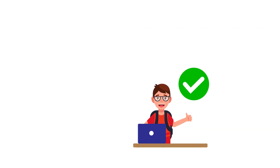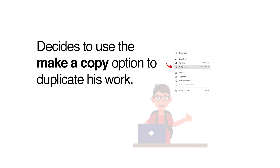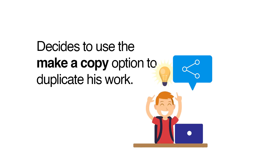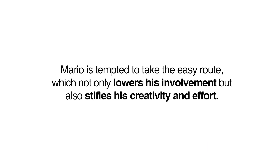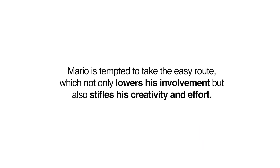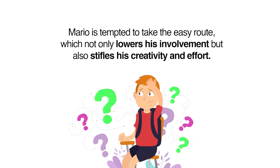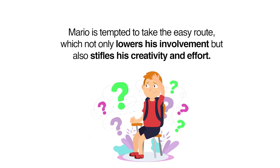Vector finishes his assignment in a flash and decides to use the make-a-copy option to duplicate his work. He shares this copy document with Mario, who then makes some minor changes and submits it as his own. As a result, Mario is tempted to take the easy route, which not only lowers his involvement but also stifles his creativity and effort.